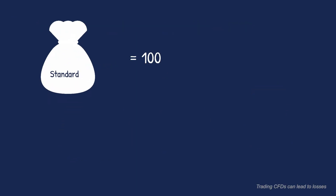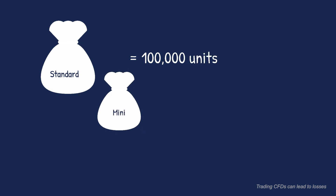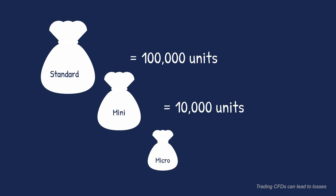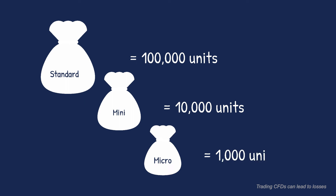One standard lot is equal to 100,000 units, one mini lot is equal to 10,000 units, and one micro lot is equal to 1,000 units of the base currency.